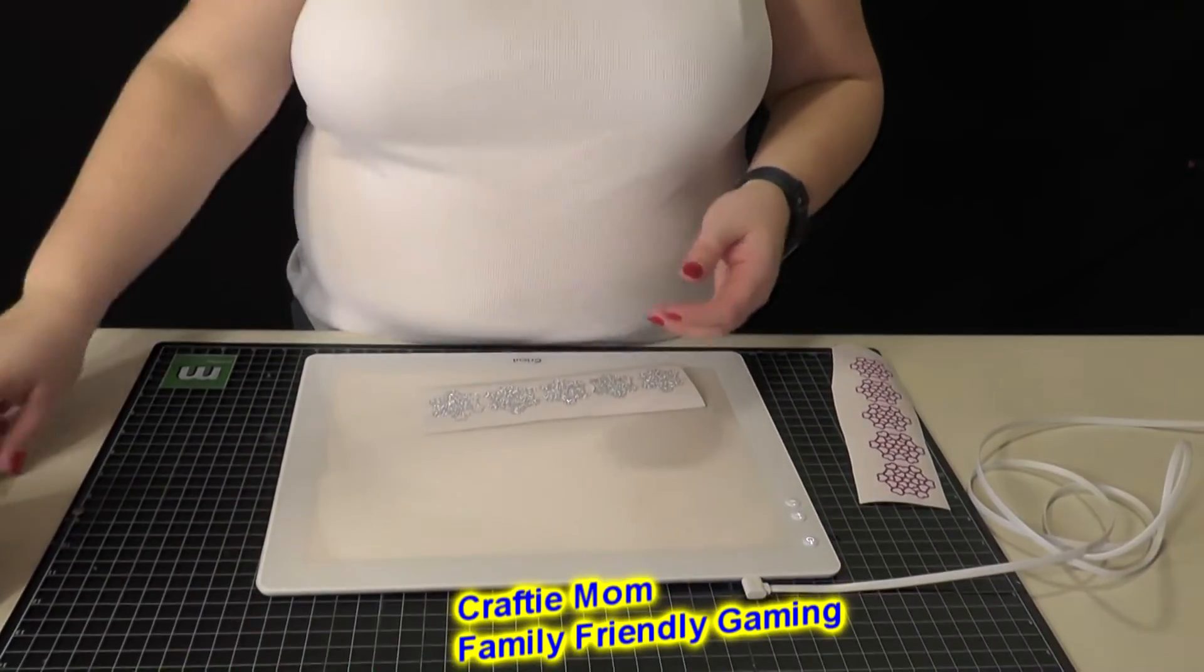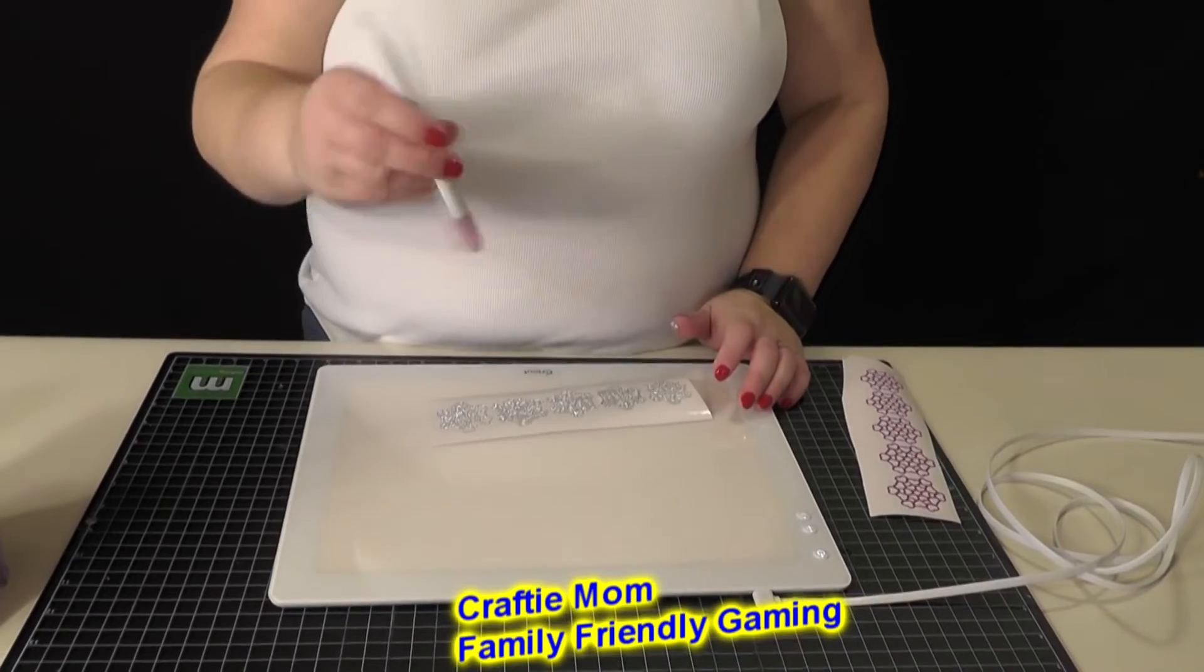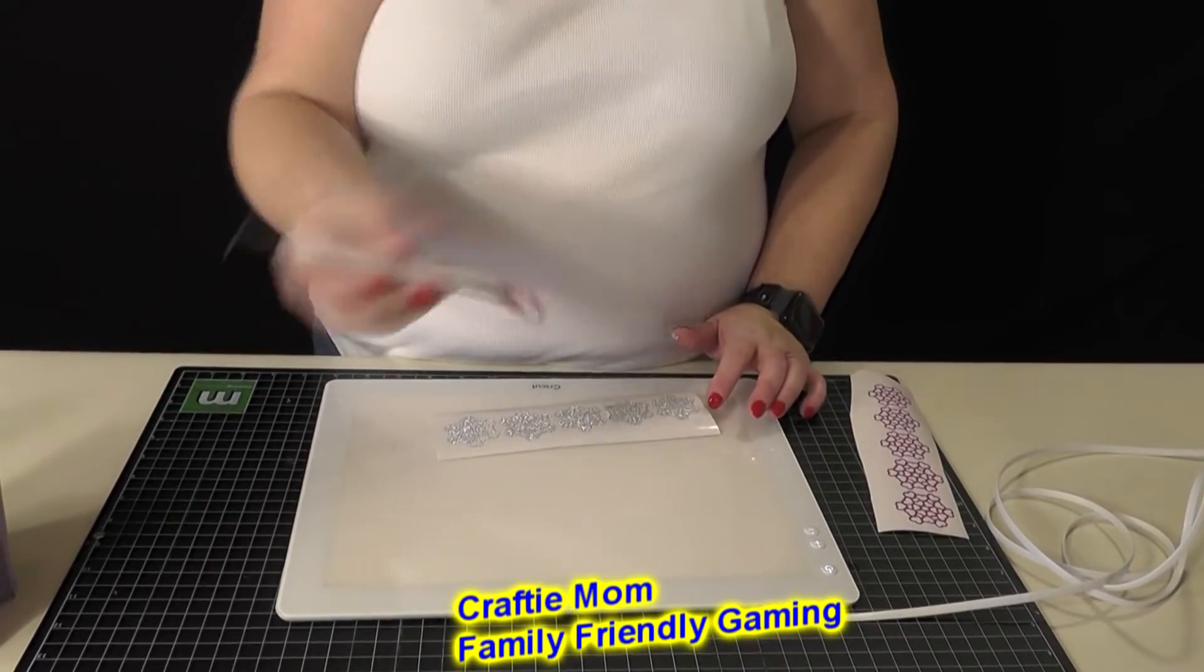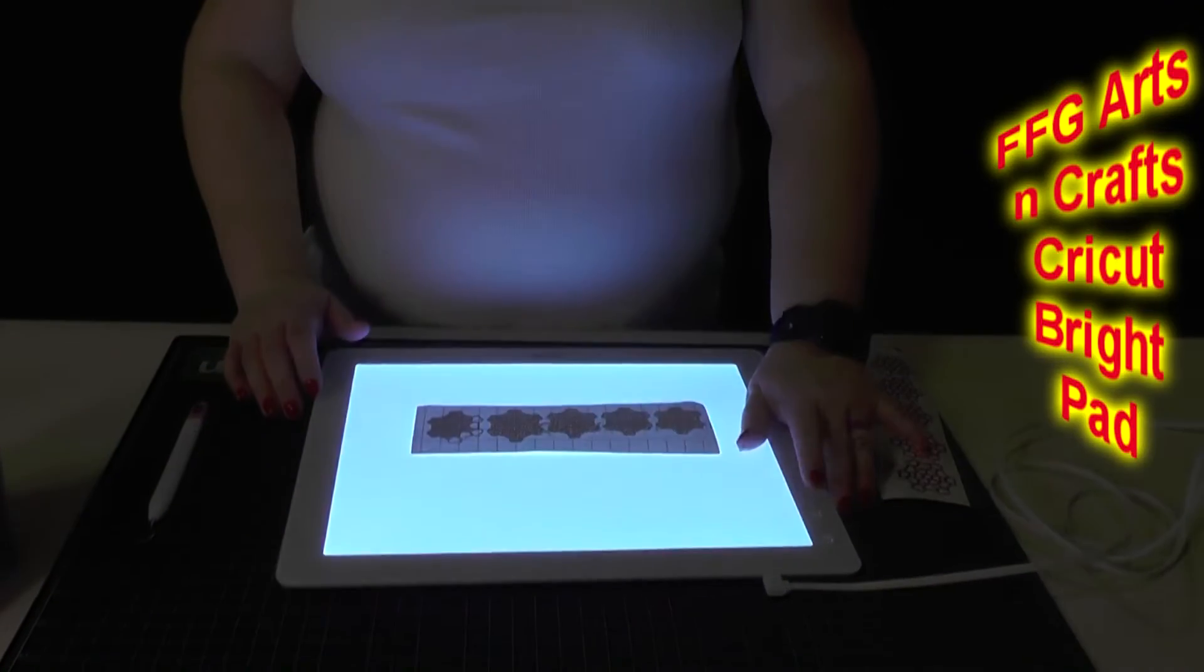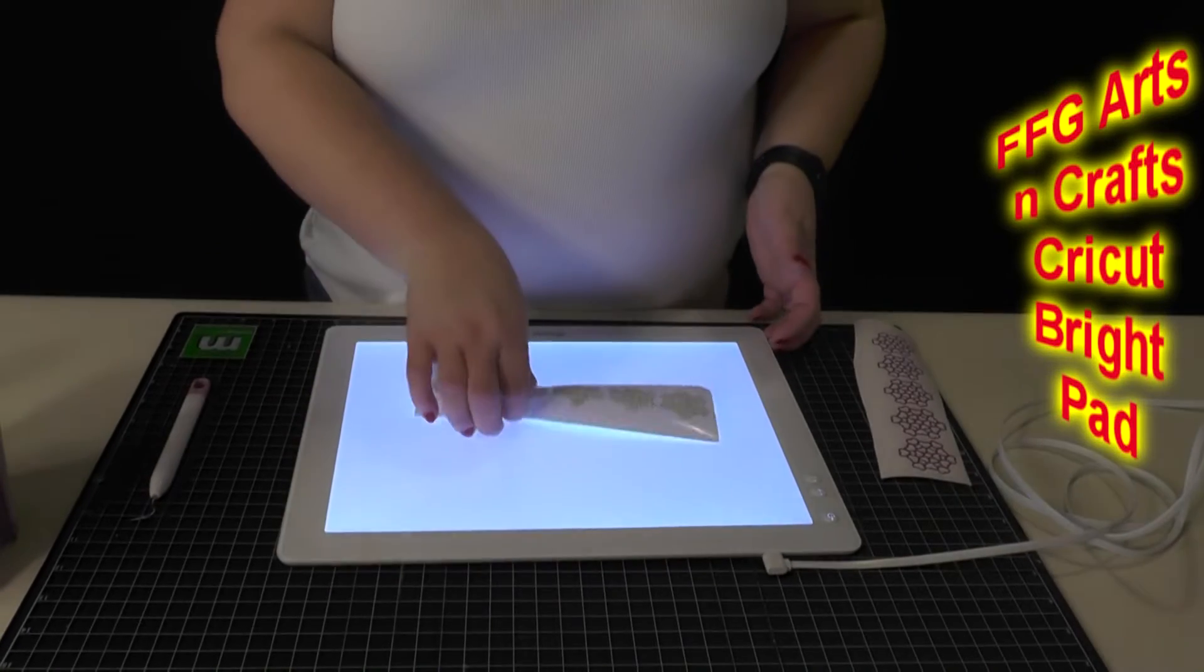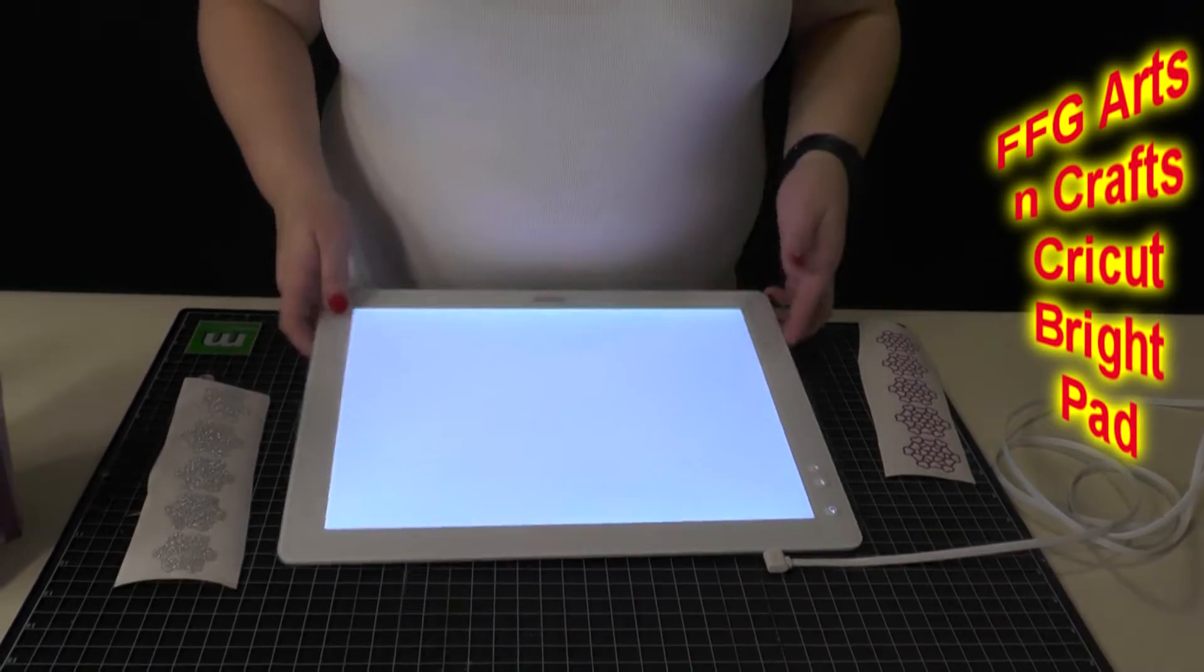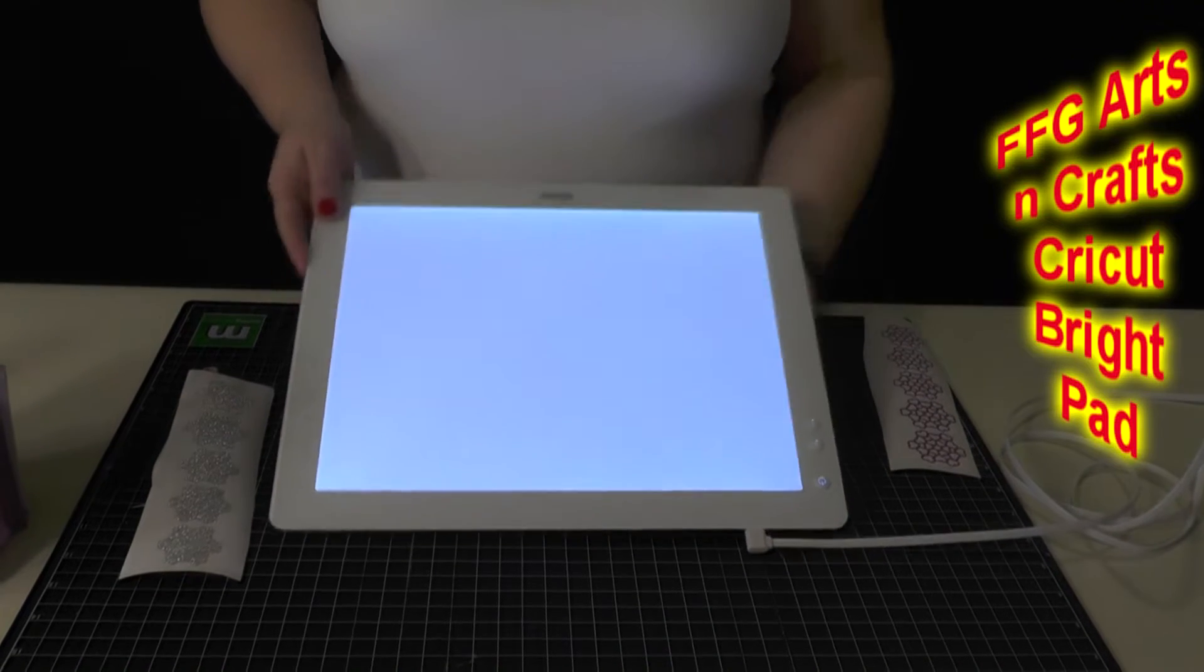I don't need them, and then I have the regular Cricut weeding tool. So I'm going to turn on the Cricut Bright Pad. It has, I think someone said, five different stages. This is the lightest, which you can't see the cut out spaces yet.